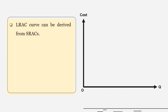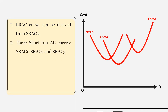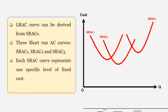On the horizontal axis we have quantity, and on the vertical axis we have cost. We have short-run average cost curve one, then SRAC two, and SRAC three. So we have three short-run average cost curves, and each short-run average cost curve represents one specific level of fixed cost. Fixed cost for SRAC three is higher than SRAC two, which is higher than SRAC one.